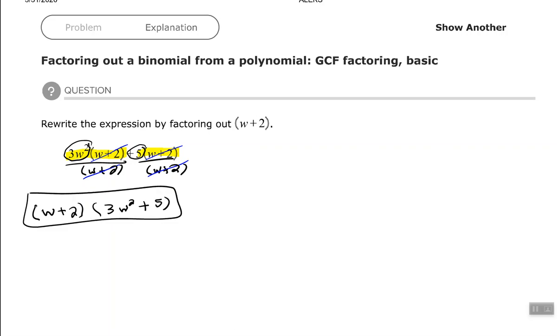Those binomials can be written in any order. You could also write that as 3w squared plus 5 times w plus 2. Either one of those will be correct. We can change the order of multiplication because of the commutative property. That's all for that one. Let's look at another one.